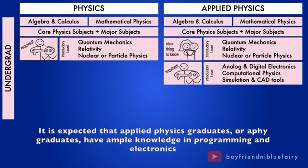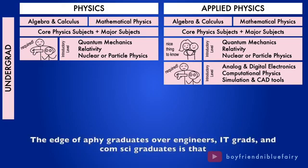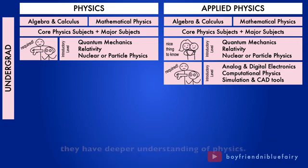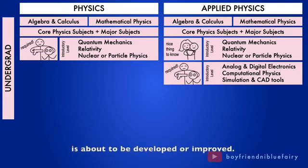It is expected that applied physics graduates have ample knowledge in programming and electronics because they are actually valuable in software and hardware engineering industry. The edge of applied physics graduates over engineers, IT grads, and computer science graduates is that they have deeper understanding of physics. And such edge is vital in research and development especially when a new product is about to be developed or improved.